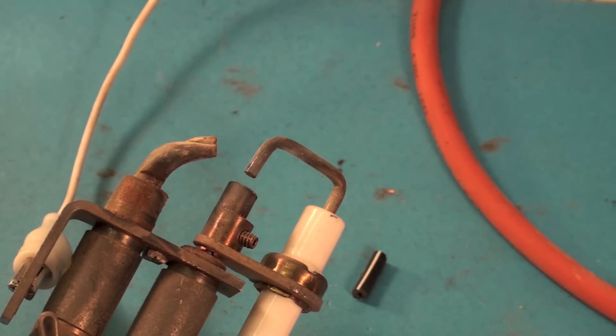Spark comes across this little gap and lights the pilot, and then there's a flame rectification proving circuit that also goes through this same rod. So let's get this thing fired up and we'll see what it looks like.